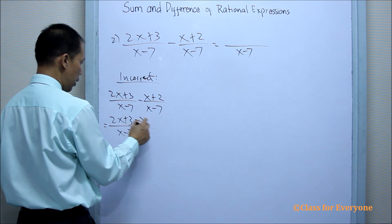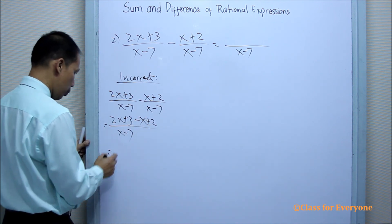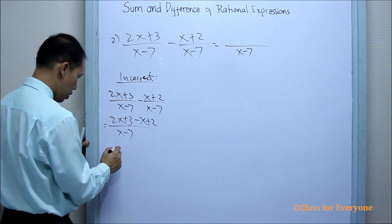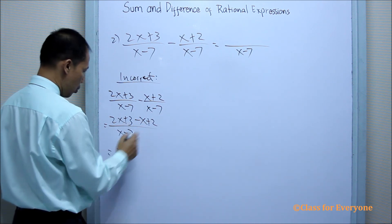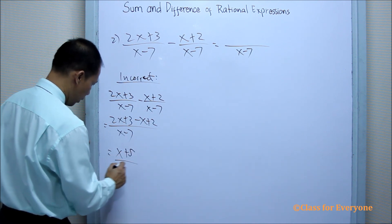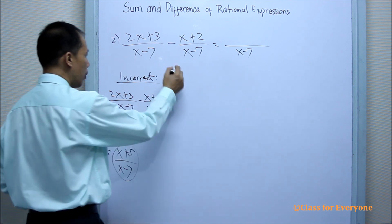2x plus 3 minus x plus 2. And then, the answer would be 2x minus x is x, and 3 plus 2 is positive 5 over x minus 7. And that would be our answer. But that is incorrect.